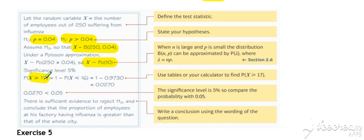And we can now work out our probability of our evidence or worse. So probability of X being greater than or equal to 17. We can do that using a Poisson rather than using a binomial.